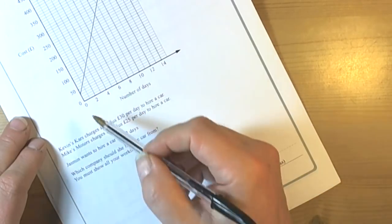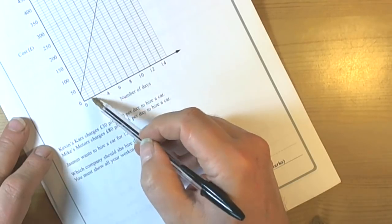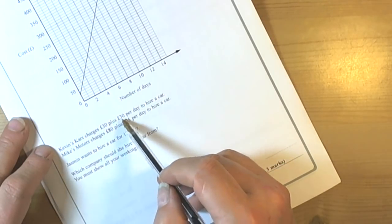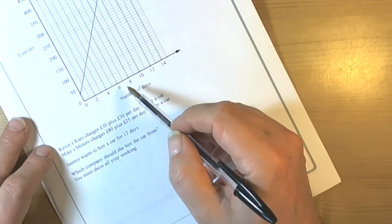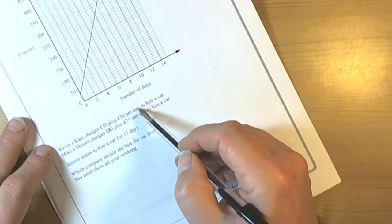Kevin's Cars charges £30. That ties with the graph because it starts at £30 for no days of hire. It's £30 plus £30 per day, and the gradient of this graph, if we worked it out, would be the £30 per day.